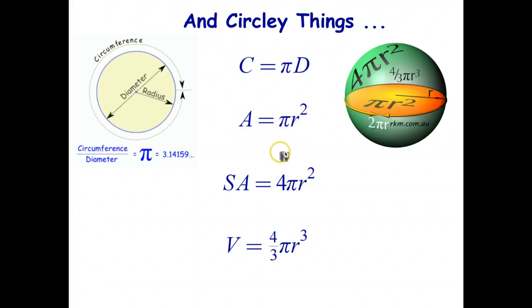Area of a circle, pi r squared. Surface area of a sphere is four of those, 4 pi r squared. And volume of a sphere is 4 thirds pi r cubed.